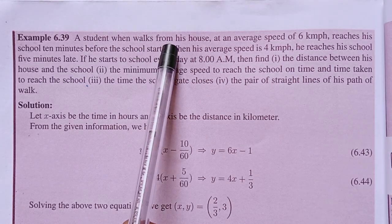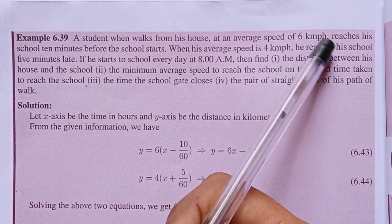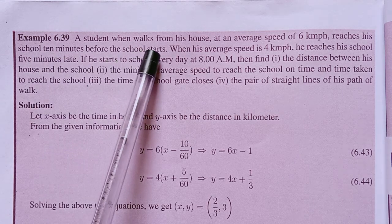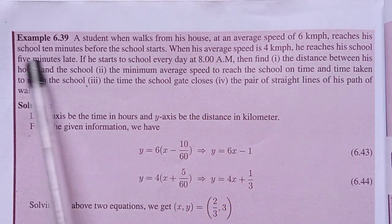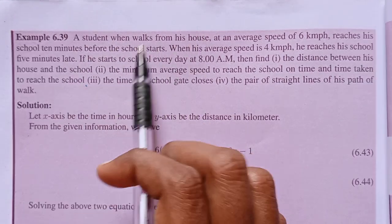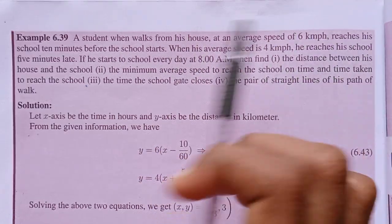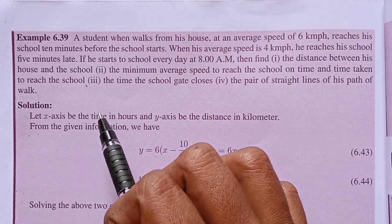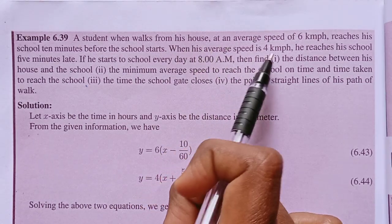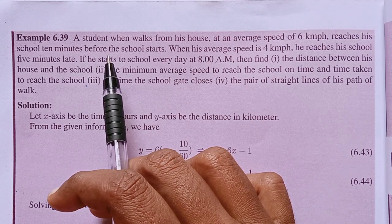A student walked from his house at an average speed of 6 km per hour and reached his school 10 minutes before school started. When his average speed is 4 km per hour, he reached school 5 minutes before school started.